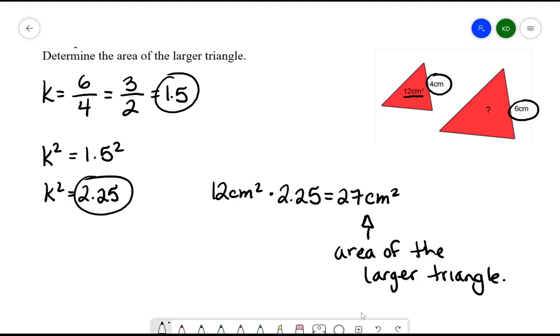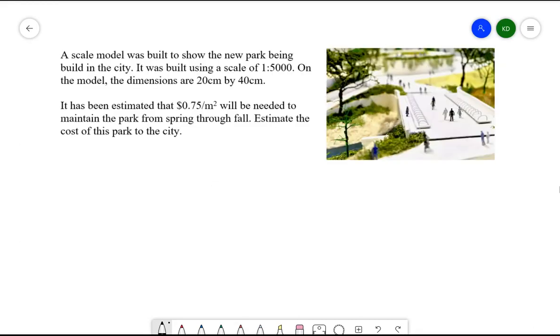Let's try one more example. A scale model was built to show the new park being built in the city. It was built using a scale of 1 to 5,000. On the model, the dimensions are 20 centimeters by 40 centimeters. It has been estimated that about 75 cents per meter squared will be needed to maintain the park from spring to fall. Estimate the cost of this park.